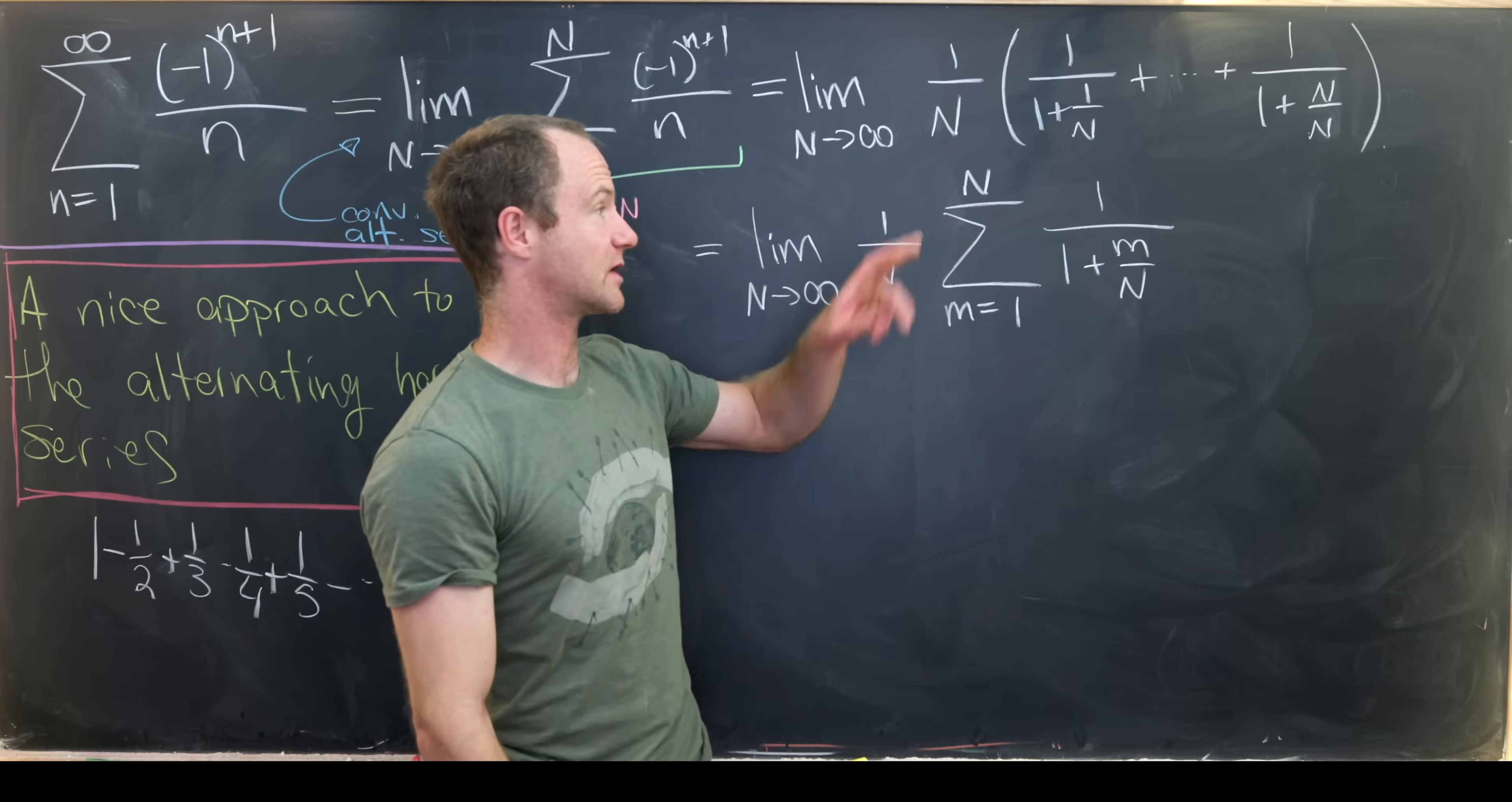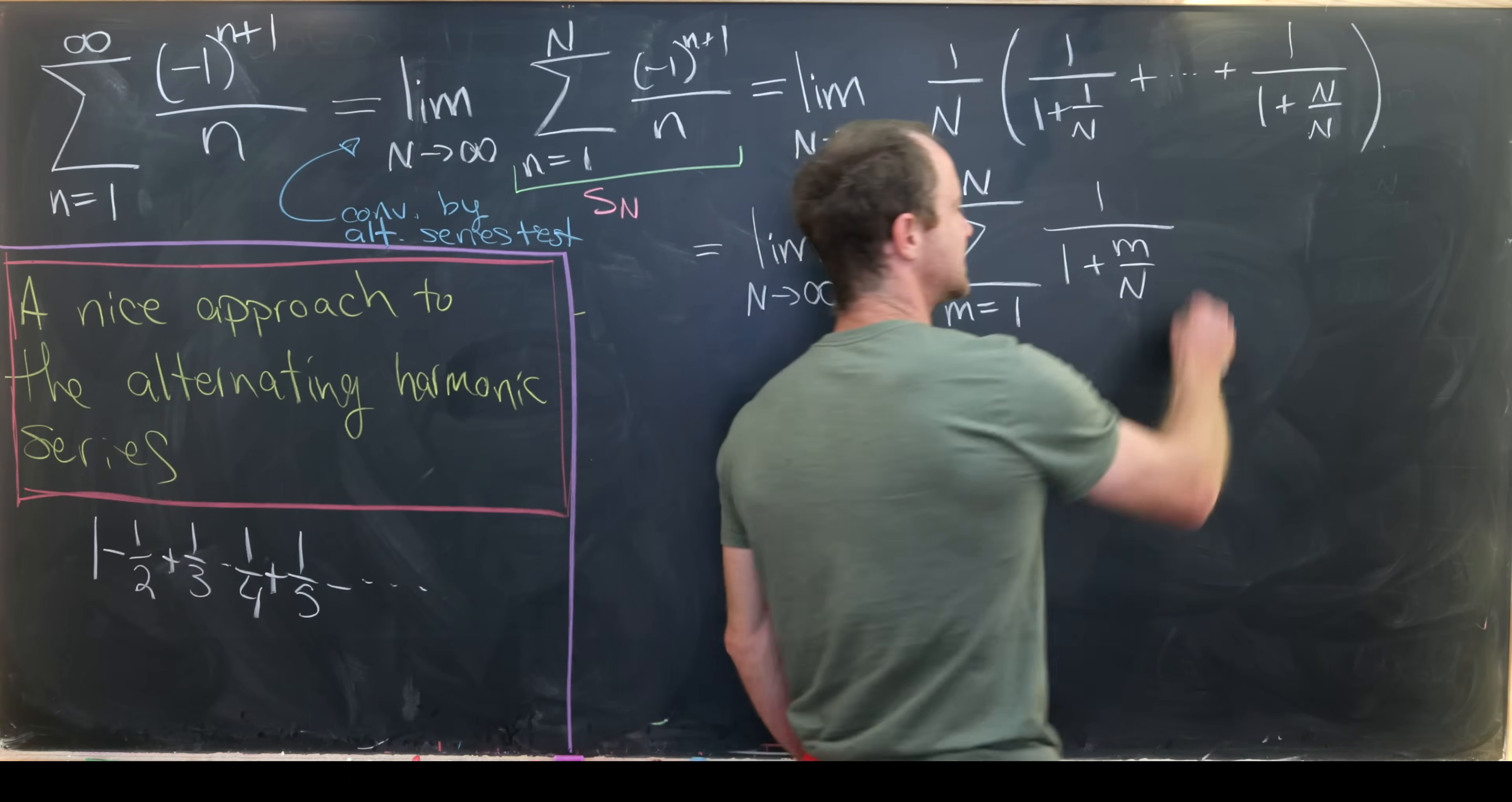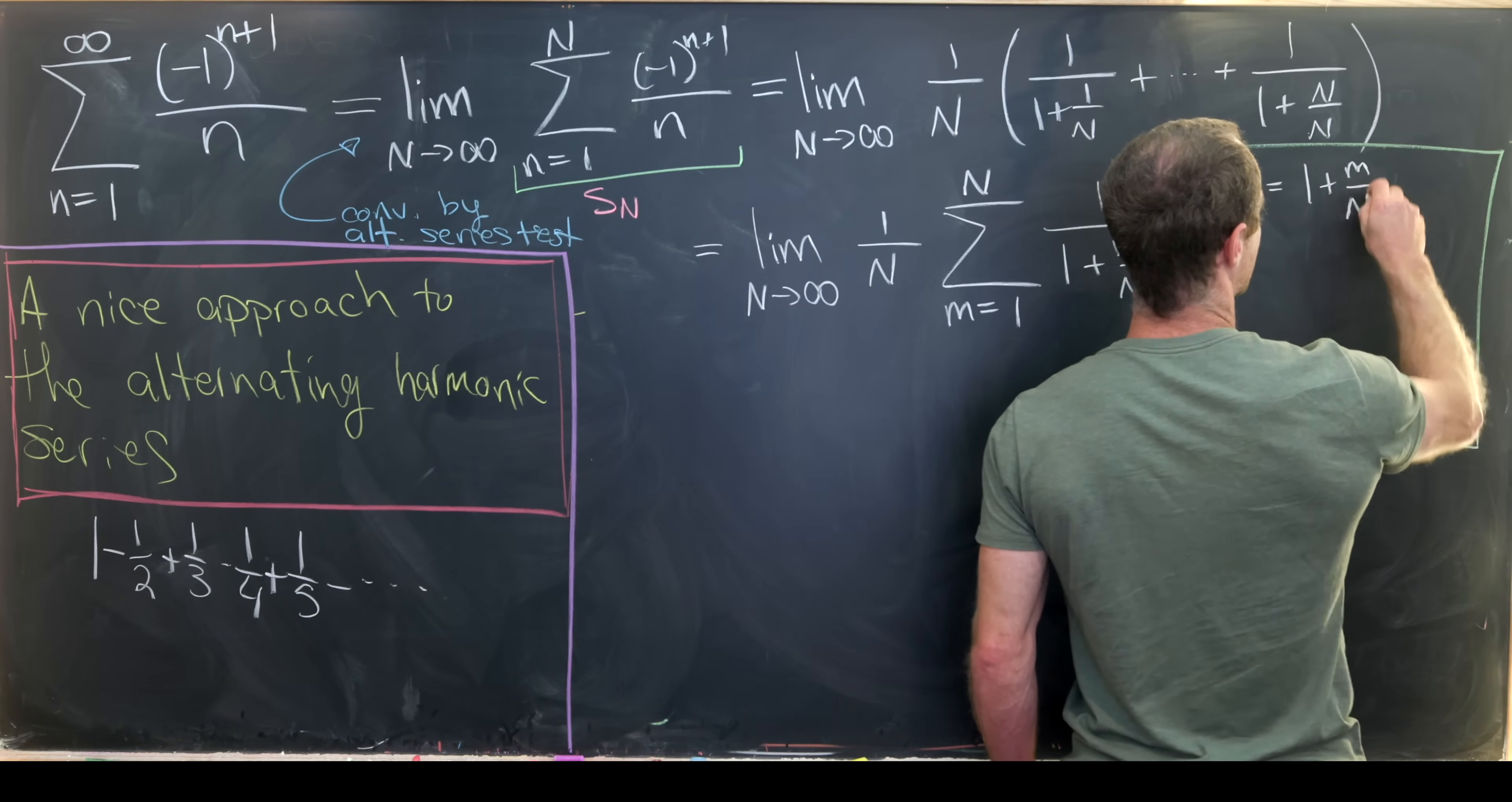So notice the M equals 1 term will give us this. The M equals capital N term will give us this last one. And now if you've taken an integral calculus class, this should start to look pretty familiar to the definition of an integral via a Riemann sum. So let's maybe introduce some notation over here to really pin this down.